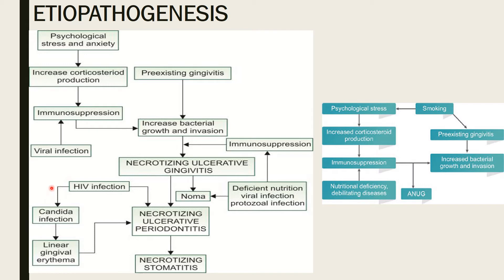Viral infection can also cause immunosuppression, leading to increased bacterial growth and ANUG. Pre-existing gingivitis and nutritional deficiency of vitamins B2 and C also cause immunosuppression leading to ANUG. If untreated, ANUG progresses to necrotizing ulcerative periodontitis, and in the most severe cases, to necrotizing stomatitis.